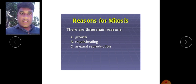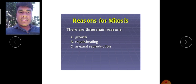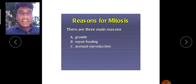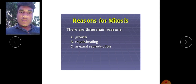First is growth. To give growth to our body, cell division has to take place. Second is repair or healing. For example, if you got an injury and your leg or hand got damaged — some flesh removed from your leg — but after some days it will recover with new flesh. How does it repair? Only because of cell division.